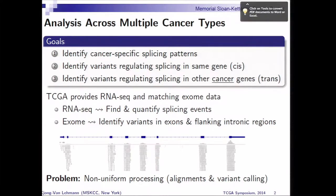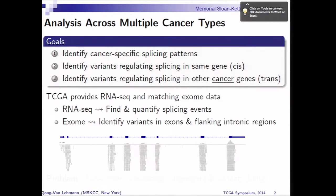We set out with the following goals. We want to identify cancer-specific splicing patterns based on the TCGA RNA-seq data. We are also interested in identifying variants regulating splicing in the same genes — trying to find cis associations — and then also trying to find variants regulating splicing in other cancer genes.